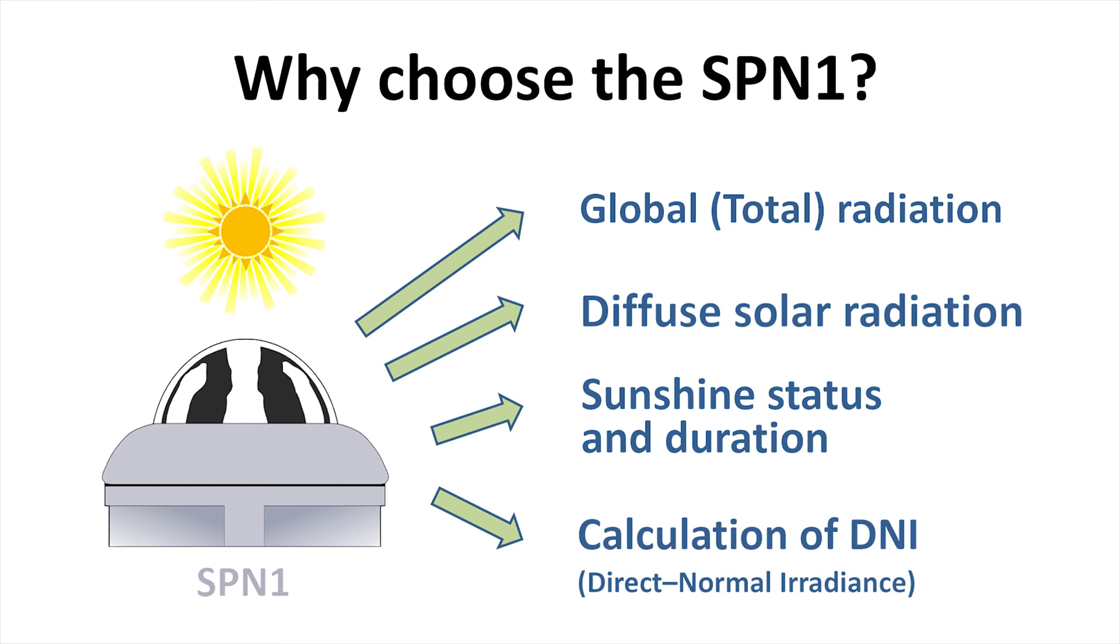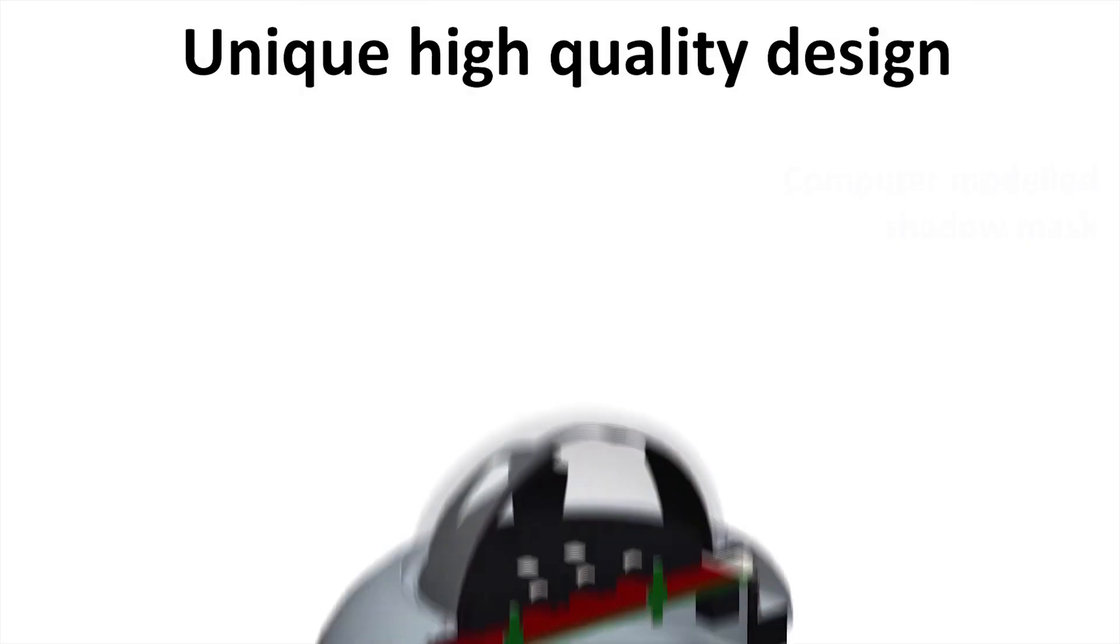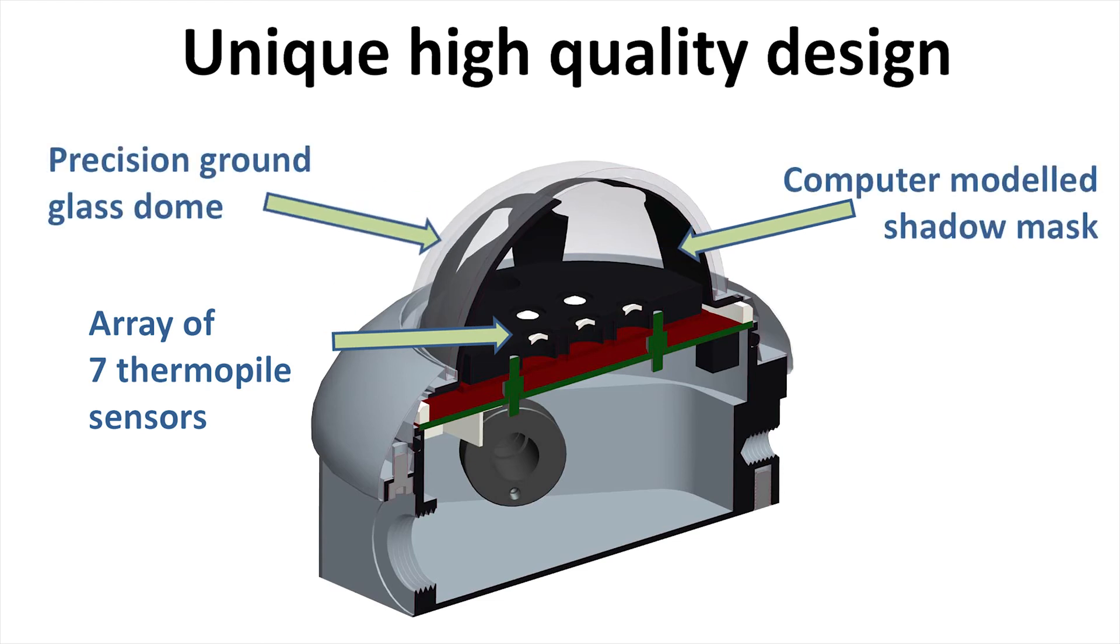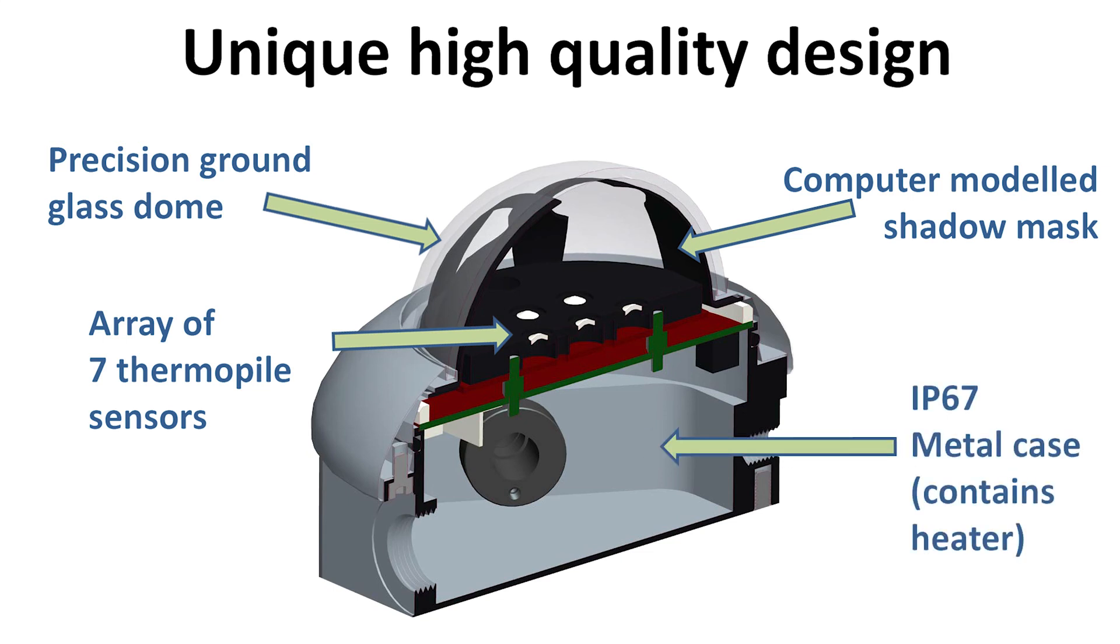It enables calculation of DNI – direct normal irradiance. Its innovative design features seven thermopile sensors, a computer-modeled shadow mask, a precision ground glass dome, a robust machined aluminum case, and an internal heater.